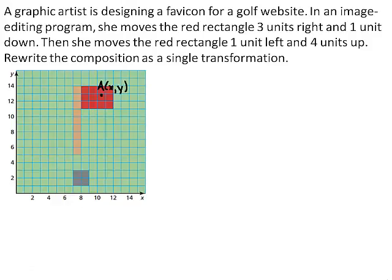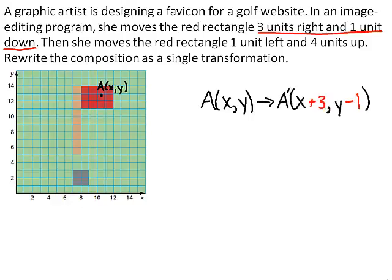Let A be an arbitrary point in the red rectangle. First, the graphic artist moves A 3 units right and 1 unit down. To find the coordinates of its image, add 3 to the x coordinate and subtract 1 from the y coordinate. So A maps to A prime.